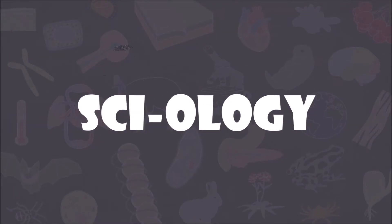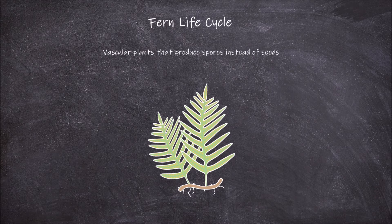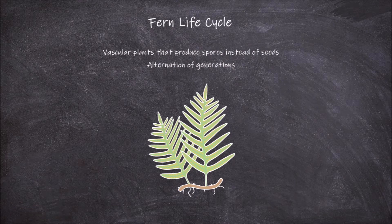Welcome back to my channel. In today's video we're going to go over the life cycle of ferns. Ferns are a group of plants that are all vascular and produce spores instead of seeds. Ferns undergo an alternation of generations in their life cycle, which consists of two generations.